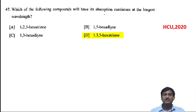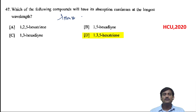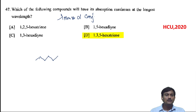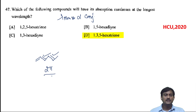Which of the following compounds will have its absorption maximum at the longest wavelength? Lambda max in UV-visible spectroscopy depends on conjugation — extension of conjugation. As the extension of conjugation increases, there is an increase in lambda max. In 1,2,5-hexatriene, there is conjugation between two pi bonds, so two pi bonds are in conjugation.